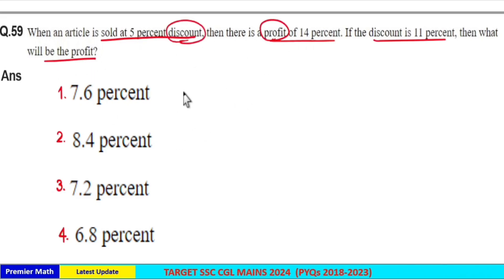Here you have discount and profit. So you can directly use course price and mark price ratio, which is 100 minus discount is course price and 100 plus profit is mark price.